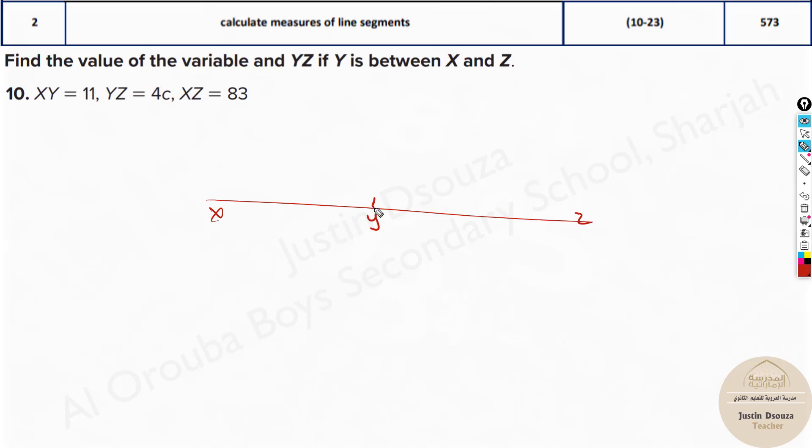I'll just put a random point. I don't know exactly the measures over here, but randomly this is what it looks like. Now XY is given as 11, YZ is given as 4c, and the total distance is given as 83.